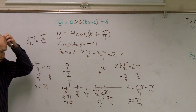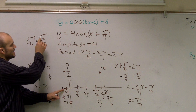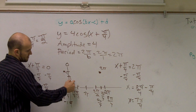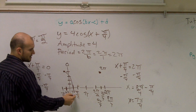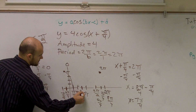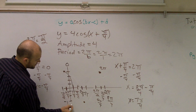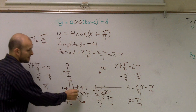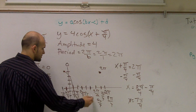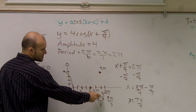Between these two endpoints, my first important point starts at negative pi over four. Adding pi over two gets me to positive pi over four. Adding another pi over two gets me to three pi over four — that's the minimum, which is down four units. Adding another pi over two gives me five pi over four. Then we cross at seven pi over four as the final endpoint.